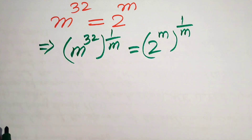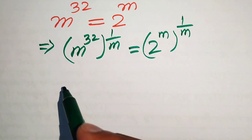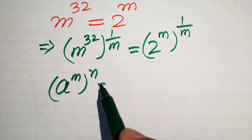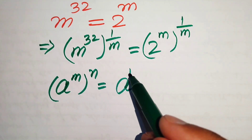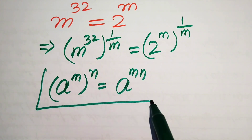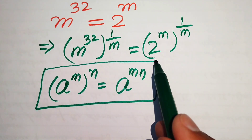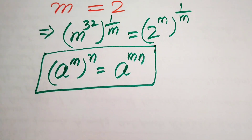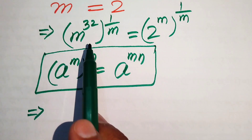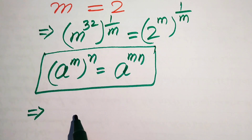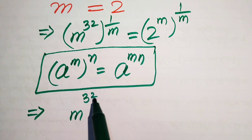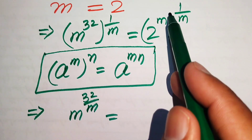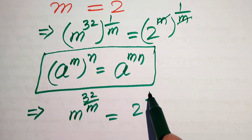In the next step we use the exponential law: if we have a to the power of m to the power of n, it equals a to the power of m times n. We apply this law on both sides. So we multiply 32 by 1 over m, giving us m to the power of 32 over m equals 2. The m cancels out and we get only 2.